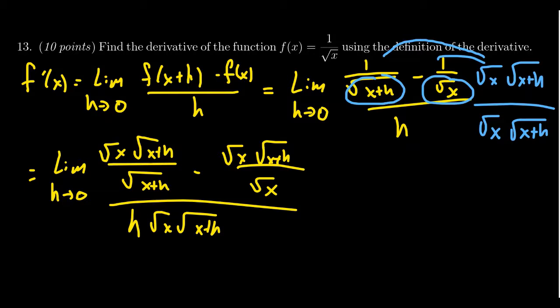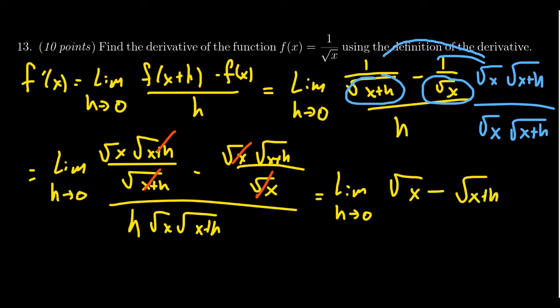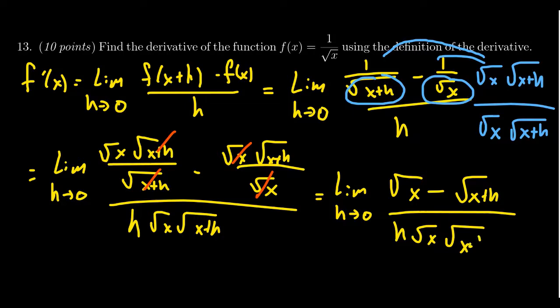The reason we multiplied by that fraction is that there's now some simplification: the square root of x plus h cancels in the first term, and the square root of x cancels in the second term. So in simplified form, taking the limit as h goes to 0, we get the square root of x minus the square root of x plus h, all over h times the square root of x times the square root of x plus h. Leave the denominator factored — it's better to do so.